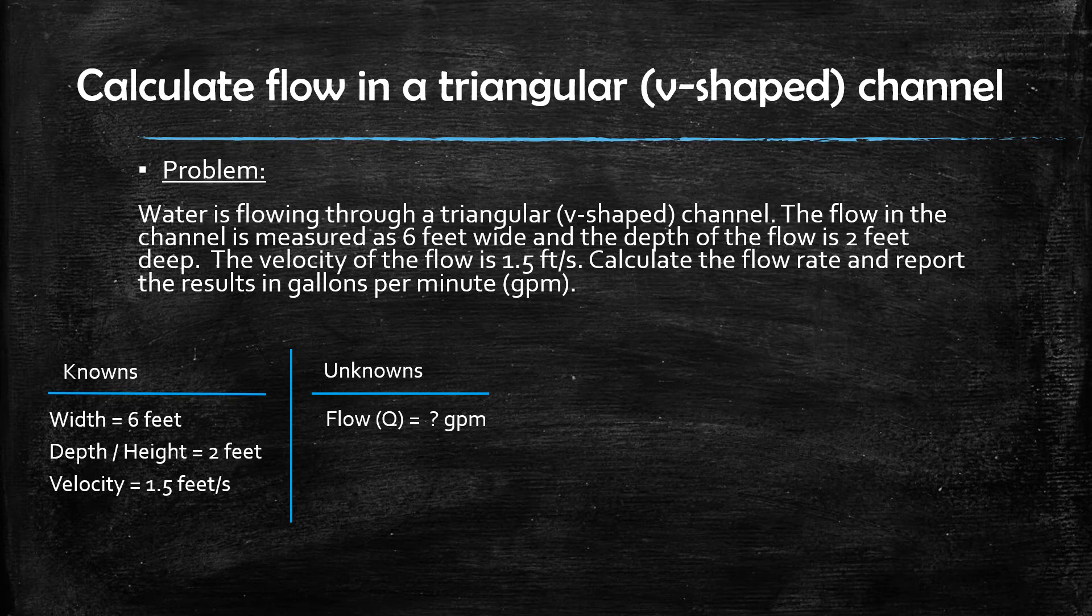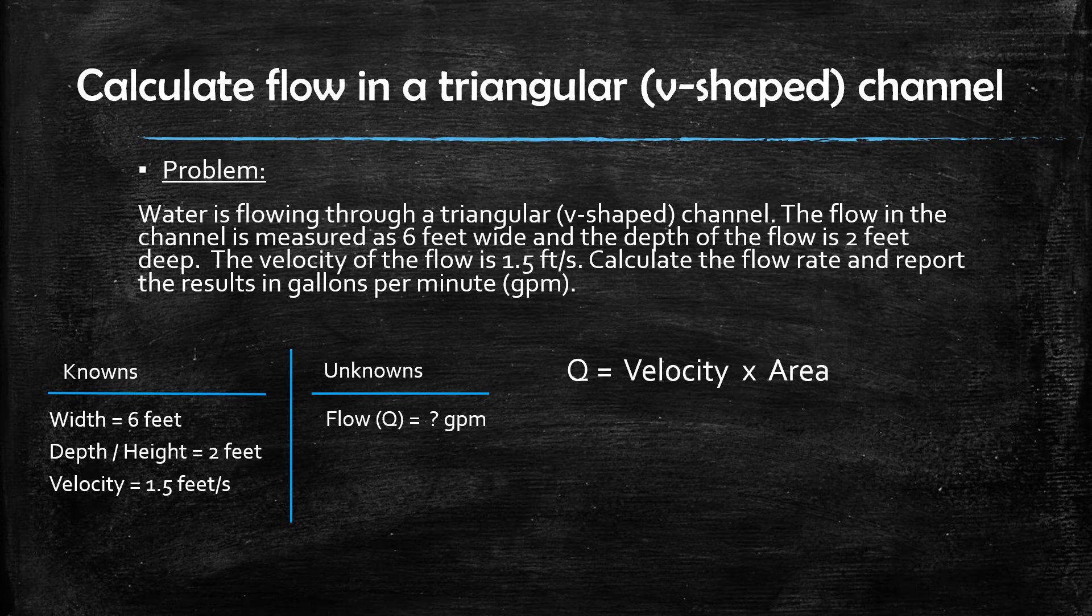We are now ready to calculate the answer. The flow rate is equal to the velocity multiplied by the cross-sectional area. The area of a triangle is given by the formula one-half multiplied by the width multiplied by the height.